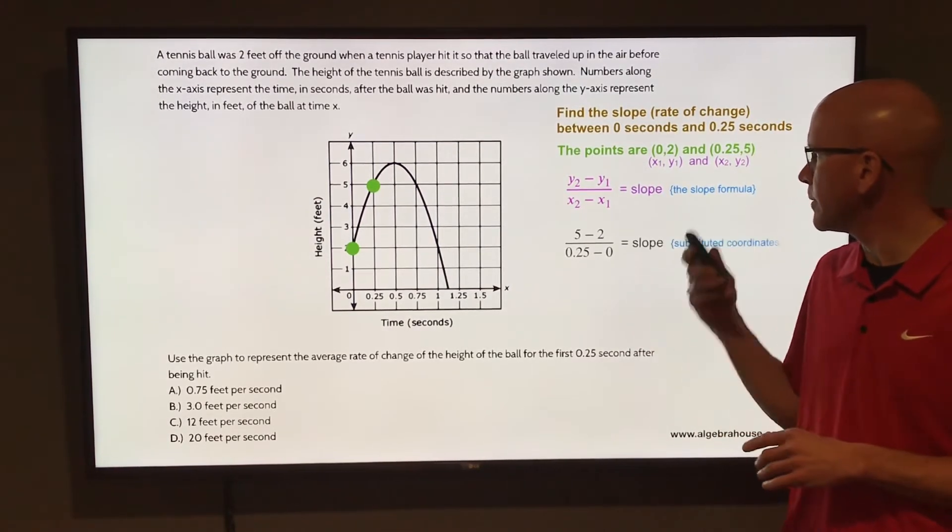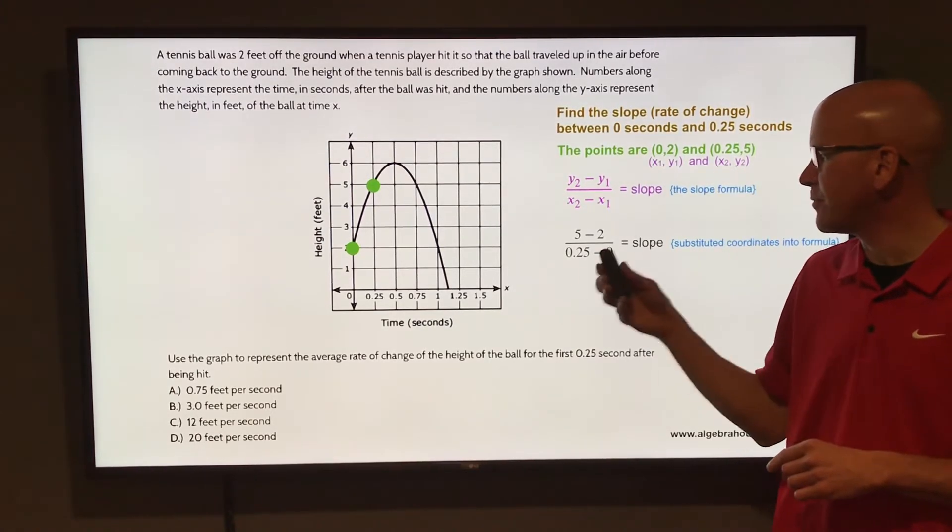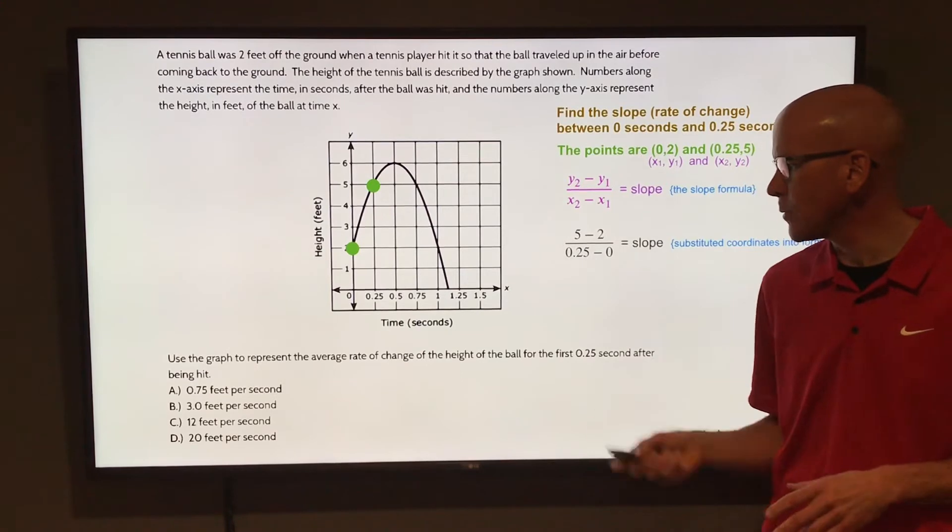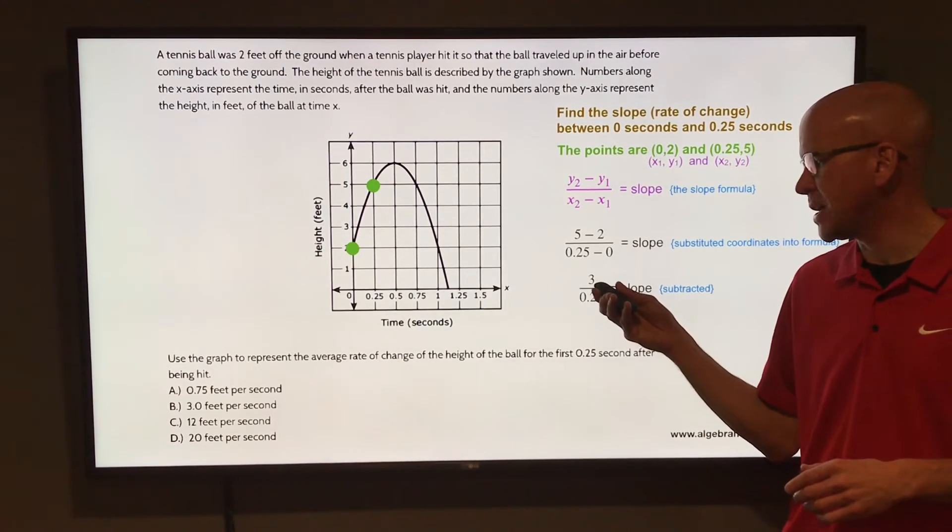So if you use the slope formula, change in y would be 5 minus 2, the change in x would be 0.25 minus 0. Work through that, simplify that, 5 minus 2 on top, that is 3, so the change in y is 3.